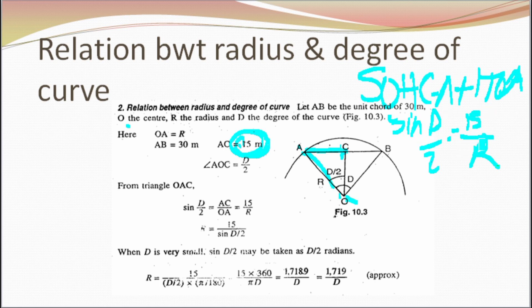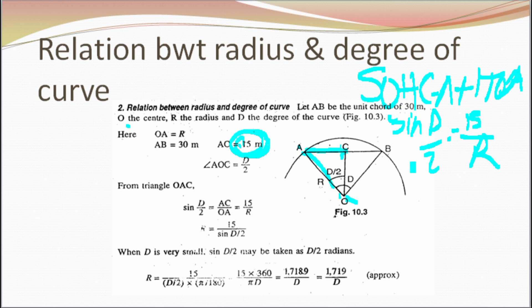So sine(D/2) = 15/R. By cross-multiplication, R multiplied by sine(D/2) equals 15, which gives us R = 15 over sine(D/2).